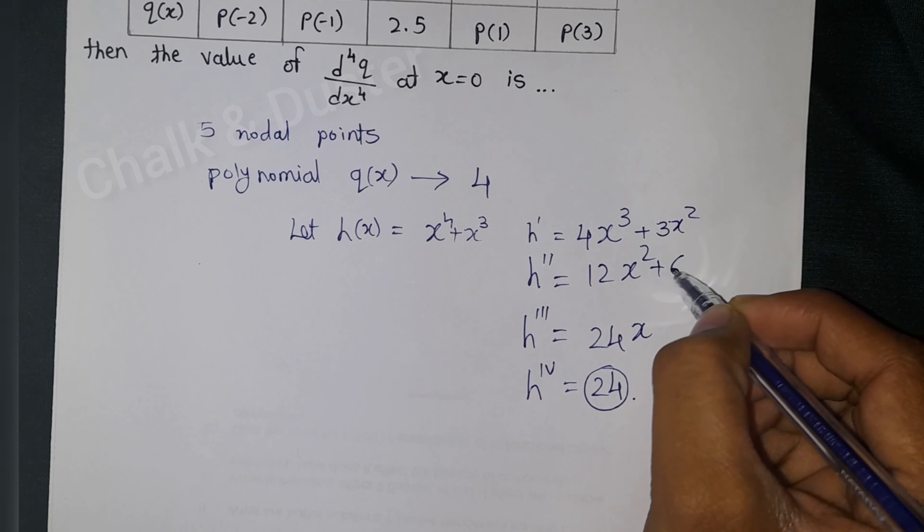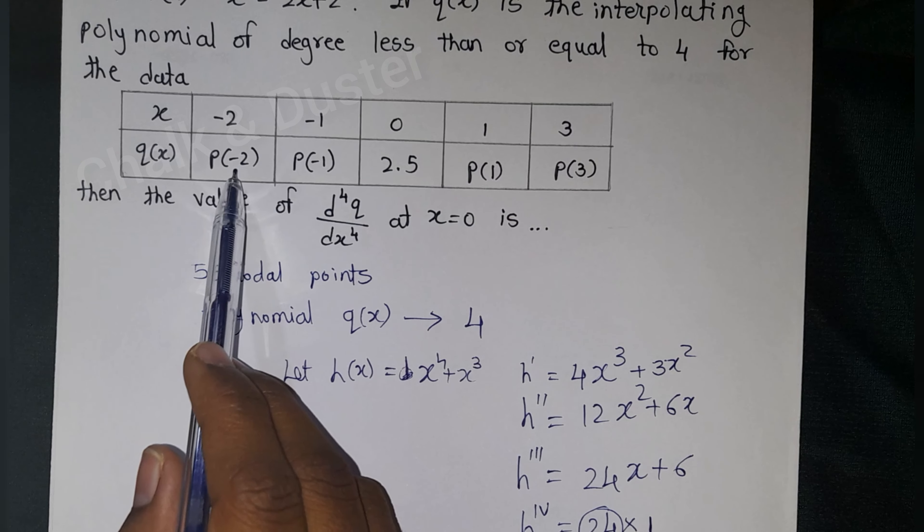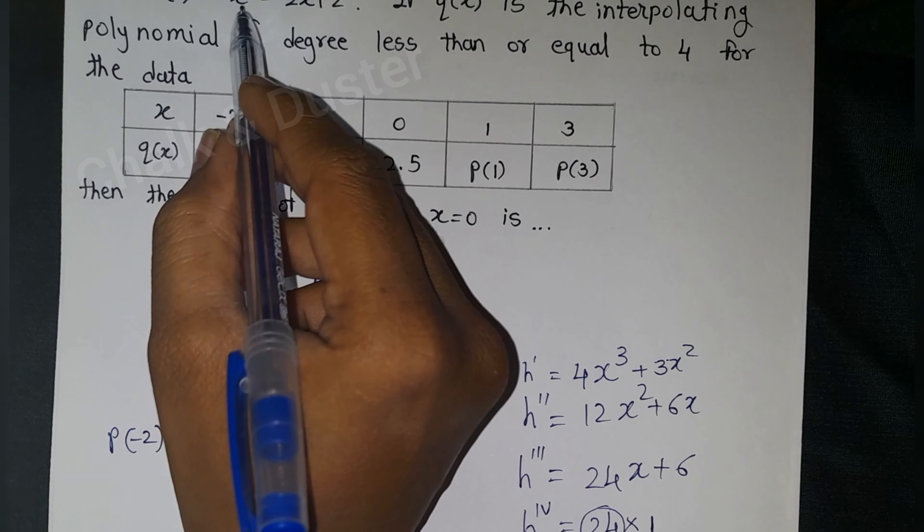So 24 × 1 = 24. We only need to find the coefficient of x⁴. We will use Newton's divided difference interpolating polynomial formula, so first we need to find q(x) values. p(-2) = -2, p(-1) = 3. p(0) is already given so no need to calculate. p(1) = 1, p(3) = 23. Now all points are ready.